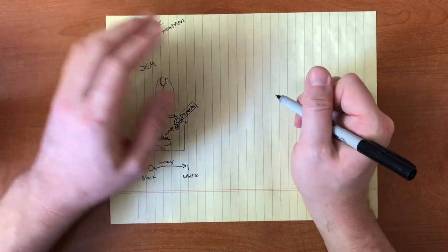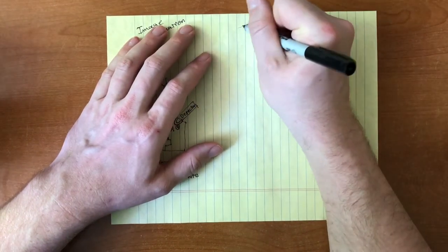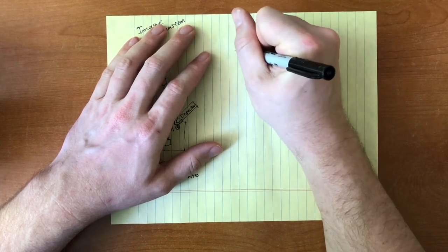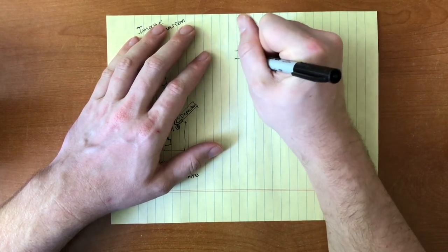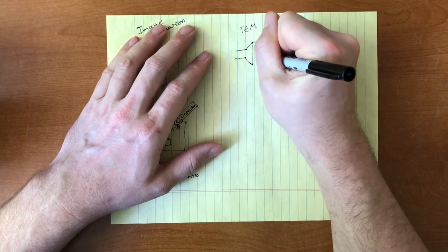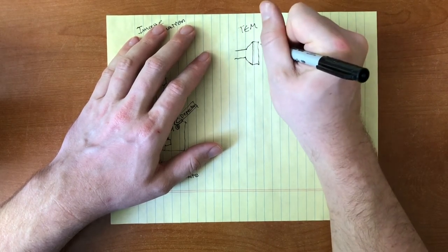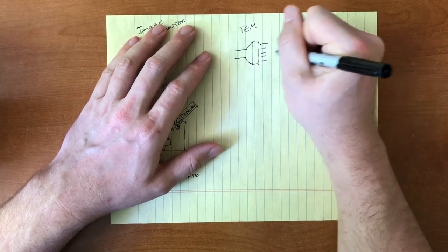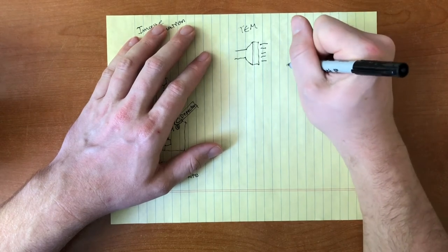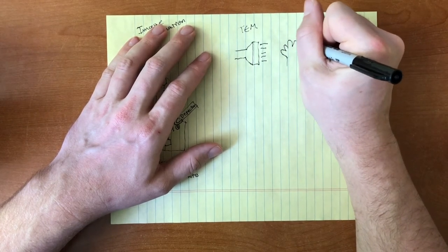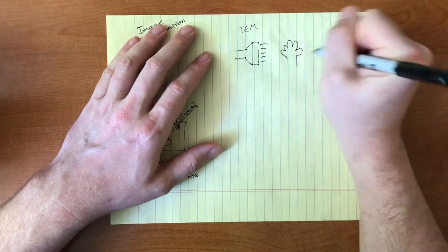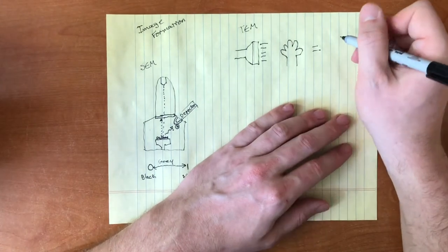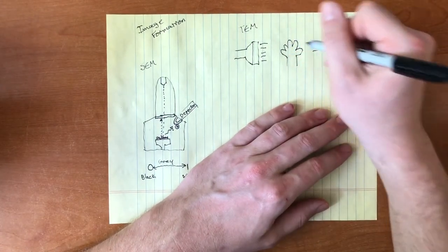Now TEM works quite a bit differently. In TEM, our electron gun is very similar to a flashlight in this case. And we can think of this as making shadow puppets with our hands, where the flashlight gives us light. We then put an object in front of it, and then we see what hasn't transmitted through our object.